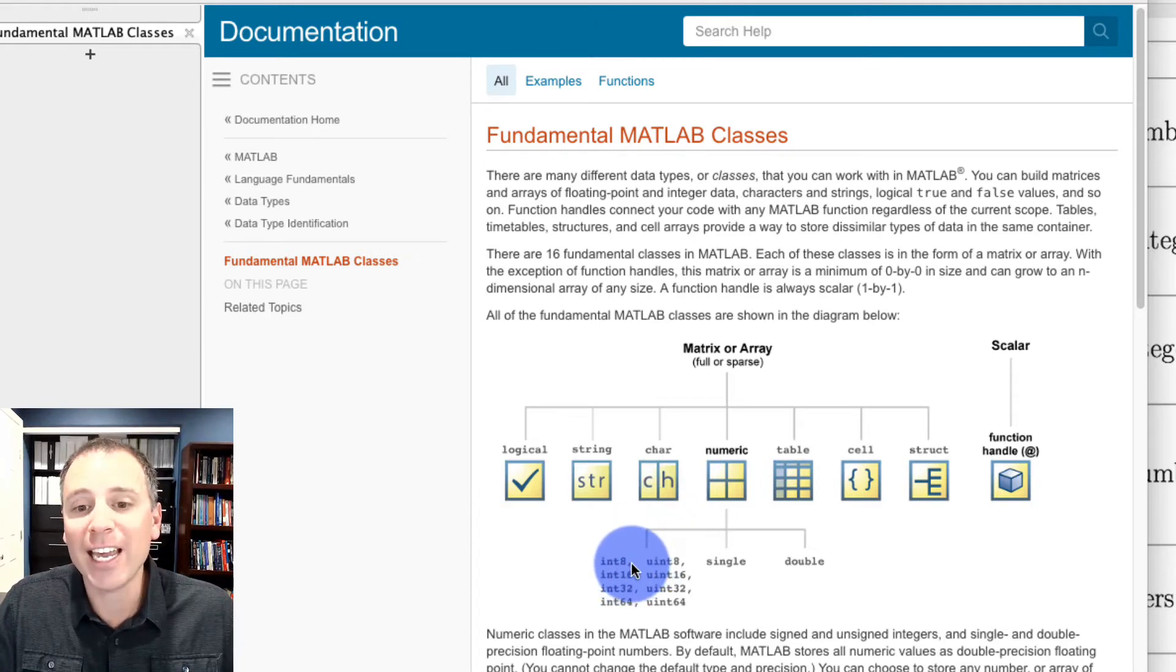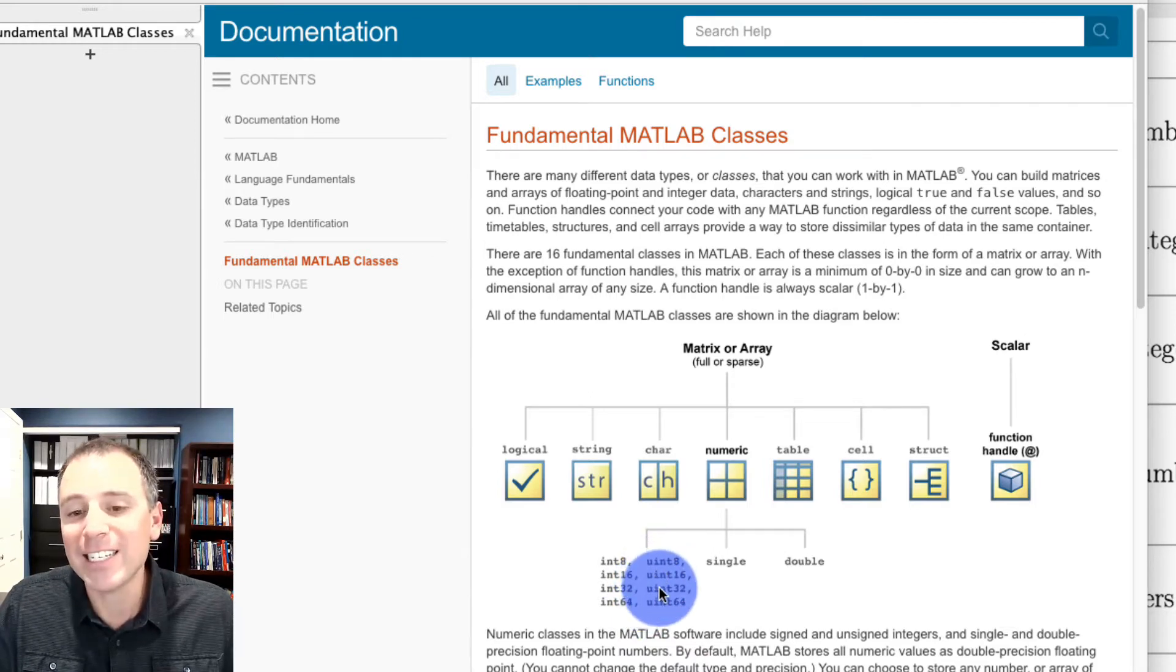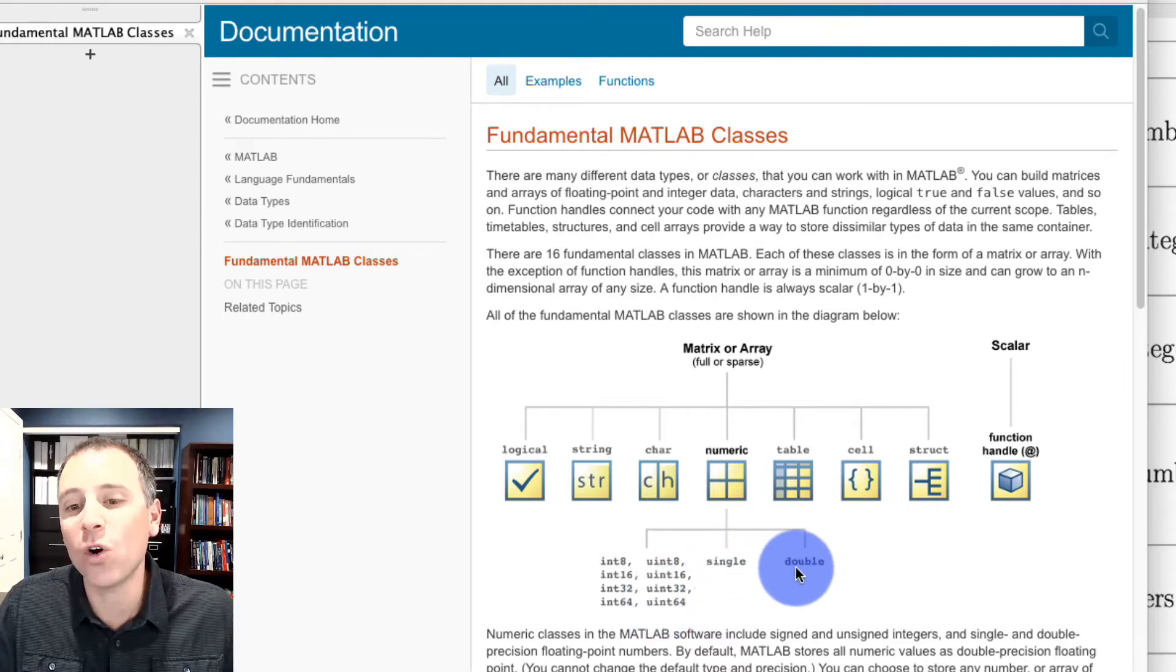Here in this diagram, we see that those are int8, int16, int32, int64, uint8, uint16, uint32, uint64, and then two floating point classes called single and double.